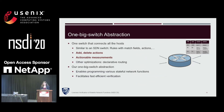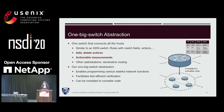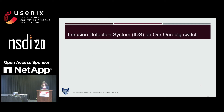The abstraction also enables fast and efficient verification, as I will show in a few minutes. As I mentioned, we can compile these functions to actual code that P4 switches can execute. Now let me show you how we can program an IDS, and later I will show you how efficiently we can verify these functions.